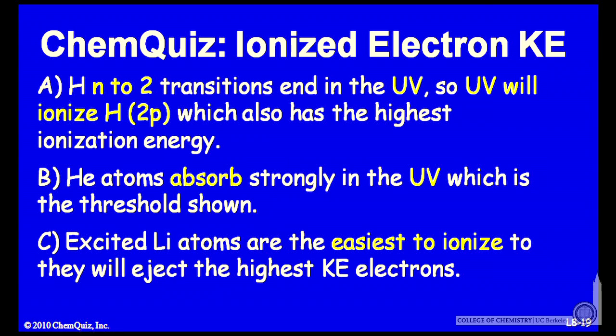For B, helium atoms absorb strongly in the ultraviolet, which is the threshold shown in the figure. Or C, excited lithium atoms are the easiest to ionize, and they will eject electrons with the highest kinetic energy.